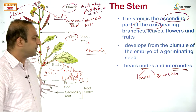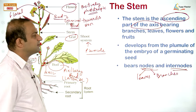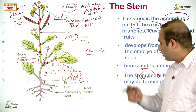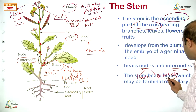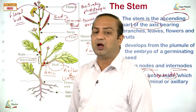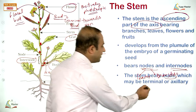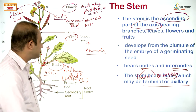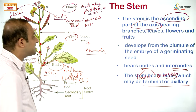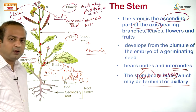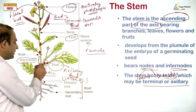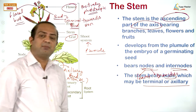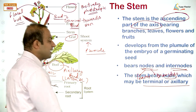The stem bears buds which may be terminal or axillary. Sometimes along with the axillary bud, there may be another type of bud present nearby in the axil region — those are called accessory buds. Terminal is the first category, axillary the second, and accessory the third. Axillary and accessory buds together are called lateral buds.